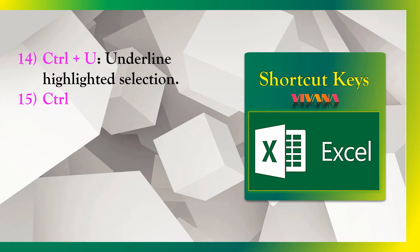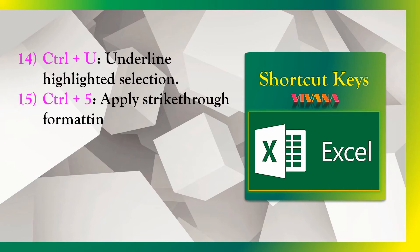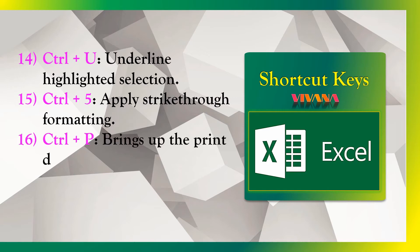15. Ctrl plus T — Applies strikethrough formatting. 16. Ctrl plus P — Brings up the print dialog box. 17. Ctrl plus Z — Undo.